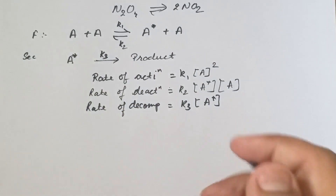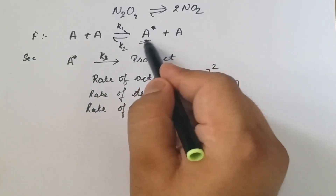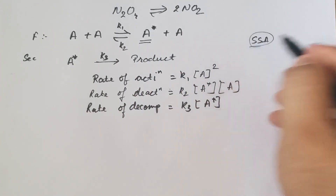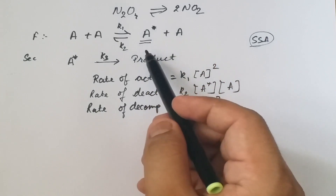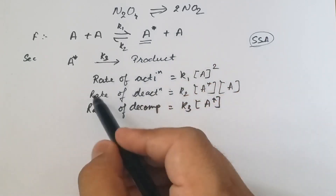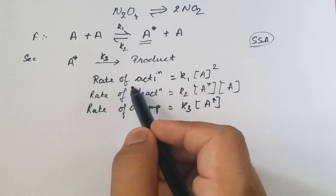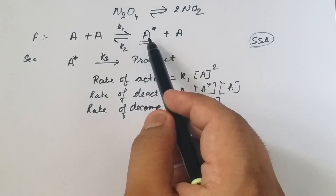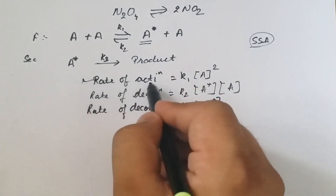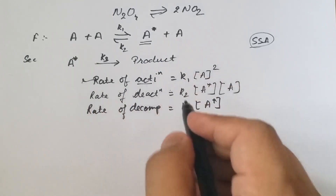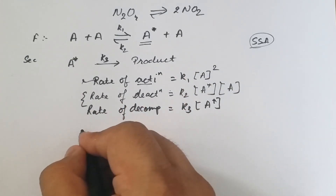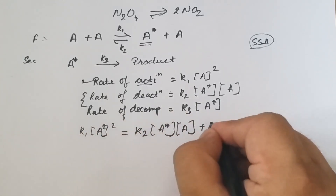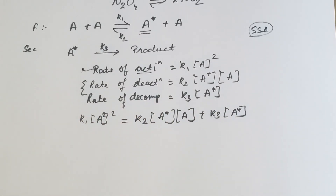According to the steady state approximation (SSA), the activated molecule formed is very short-lived. According to the steady state approximation, whenever a short-lived species is generated in a reaction, the rate of formation is always equal to the rate of decomposition. Therefore, applying SSA: k₁[A]² = k₂[A*][A] + k₃[A*].